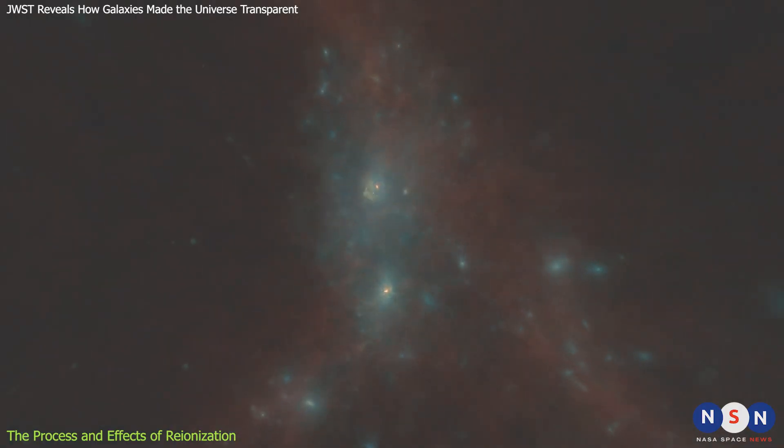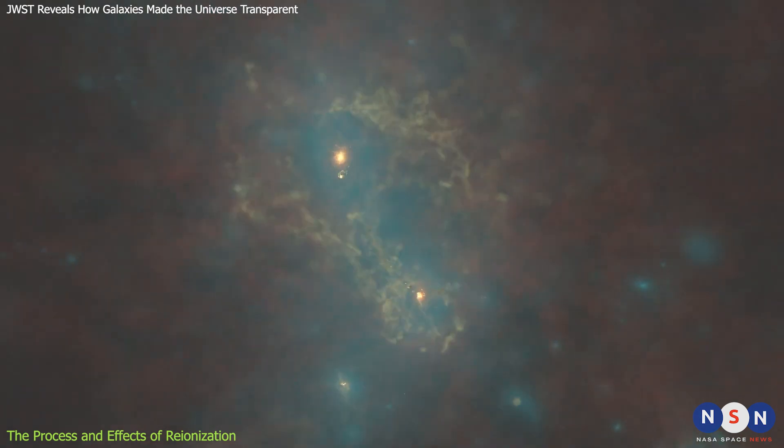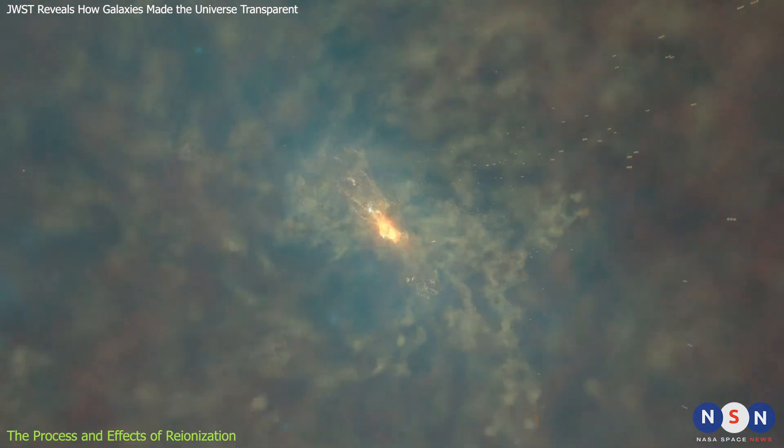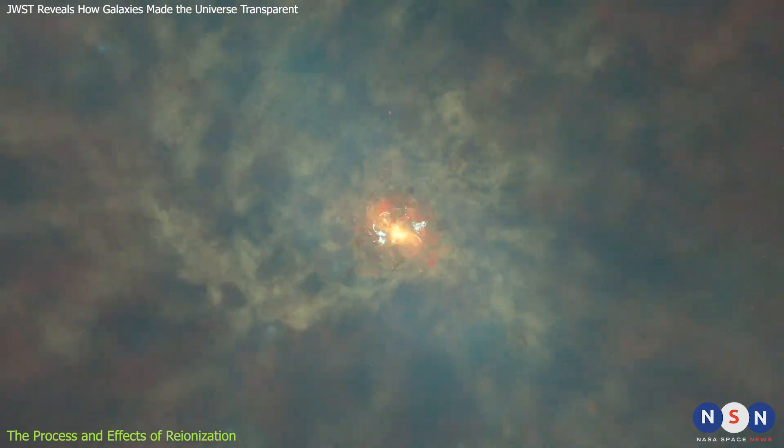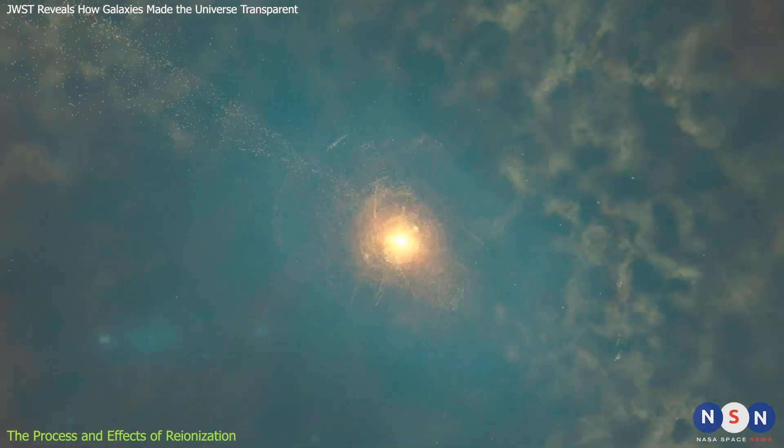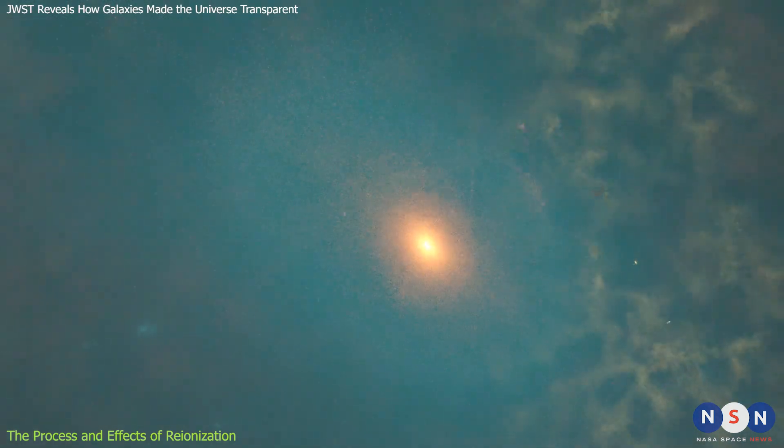Re-ionization began about 400 million years after the Big Bang, when the first stars and galaxies formed in the universe. At that time, most of the intergalactic medium was neutral and opaque to ionizing photons, meaning that they could not travel far before being absorbed by hydrogen atoms. This made it difficult for astronomers to observe these early sources of light with conventional telescopes.